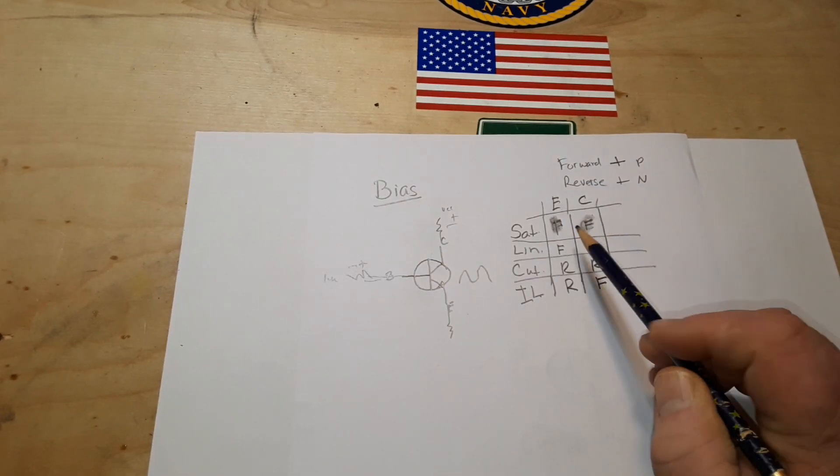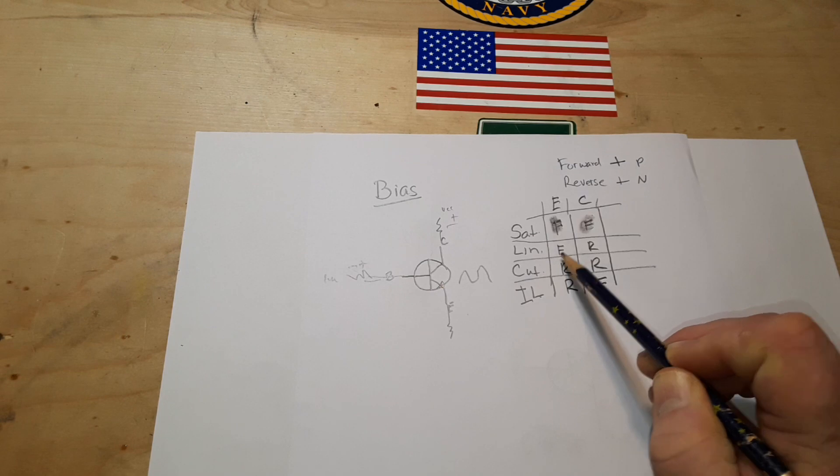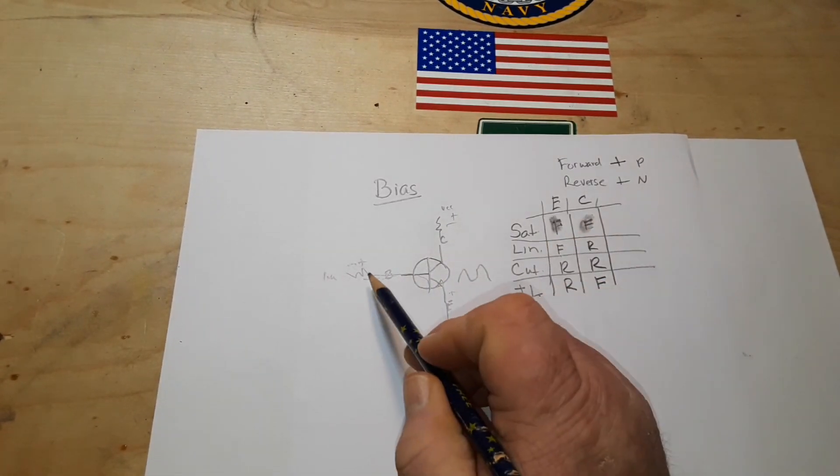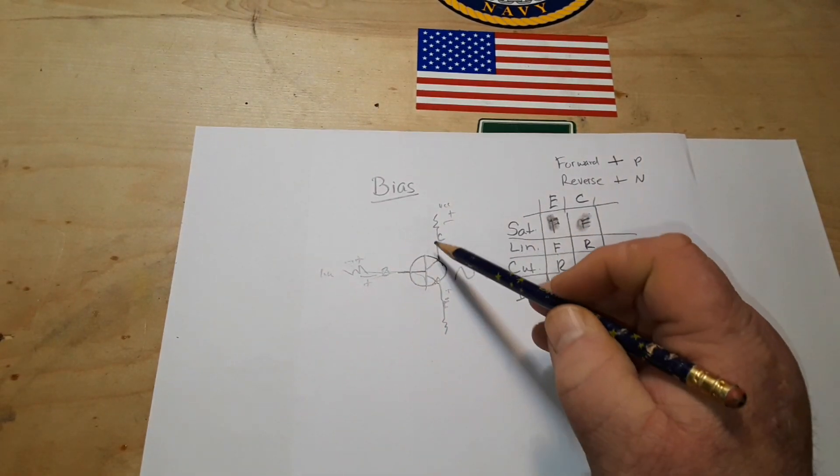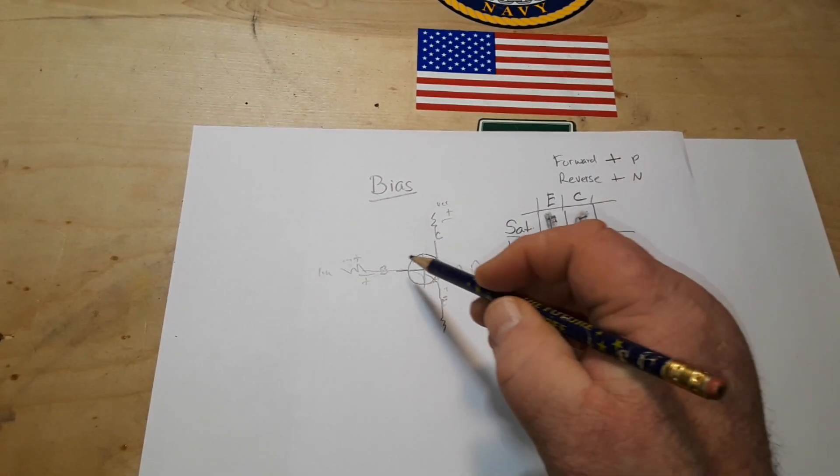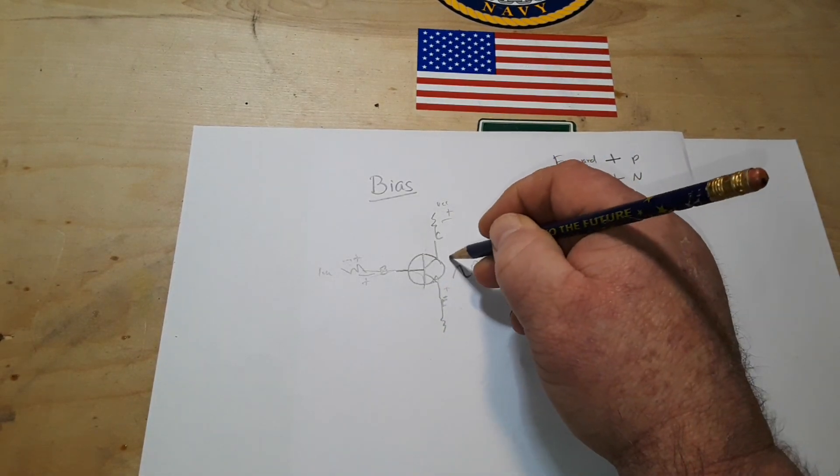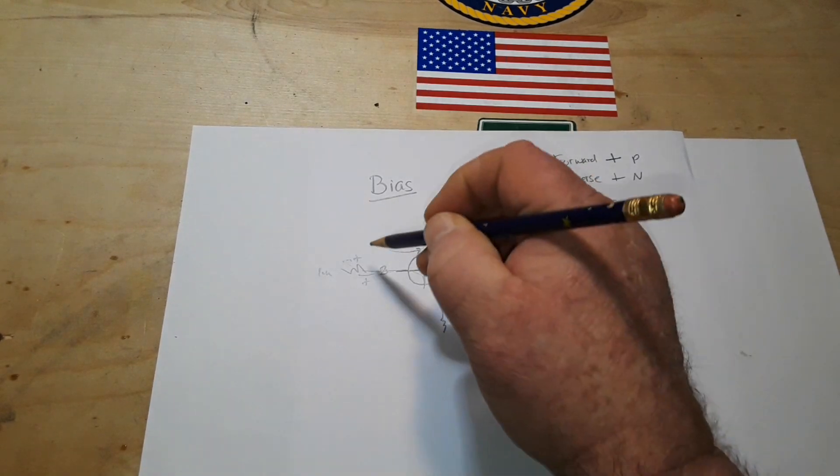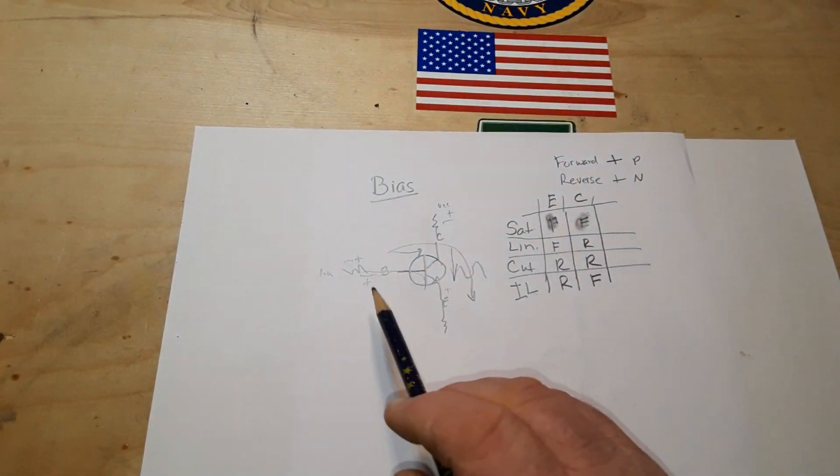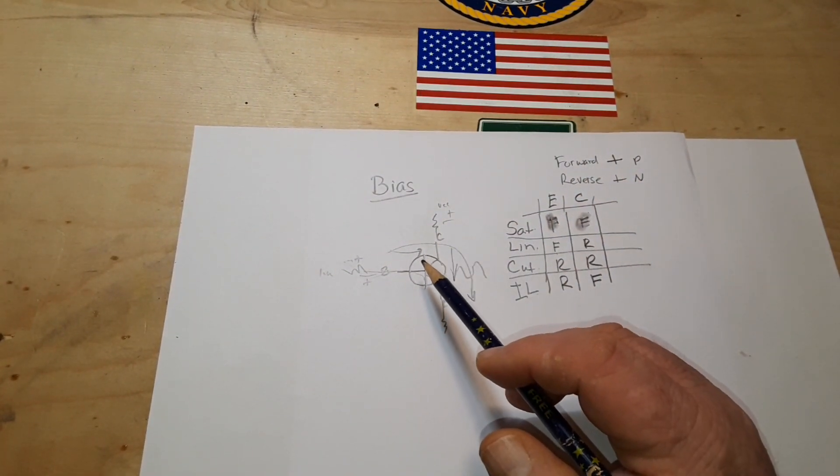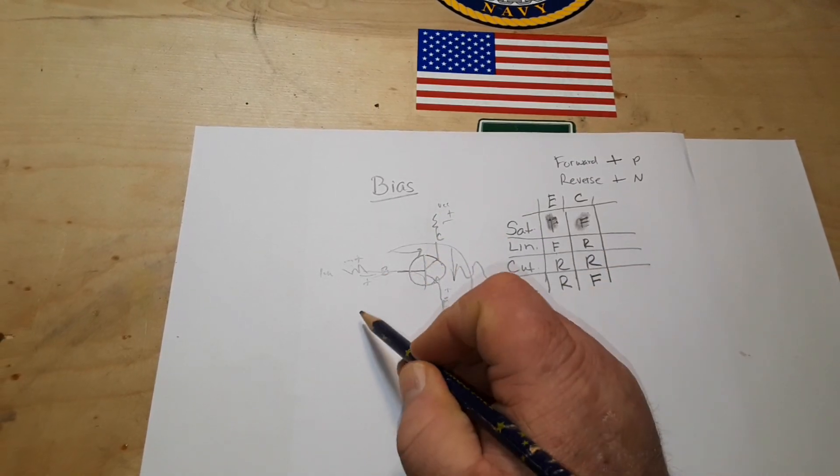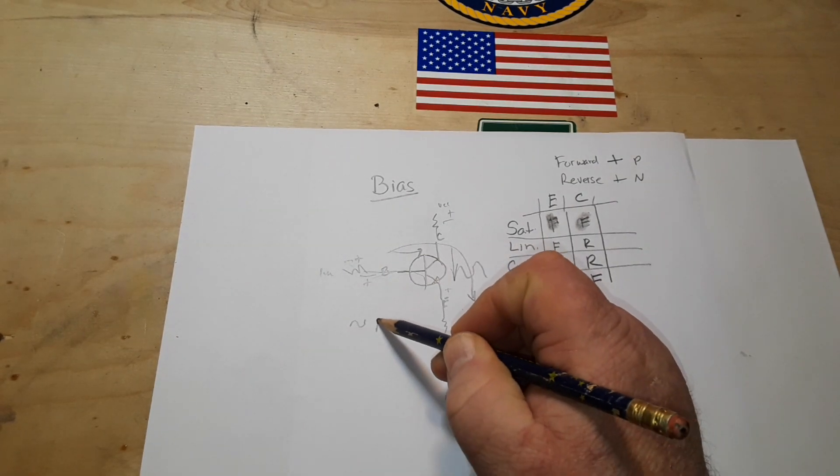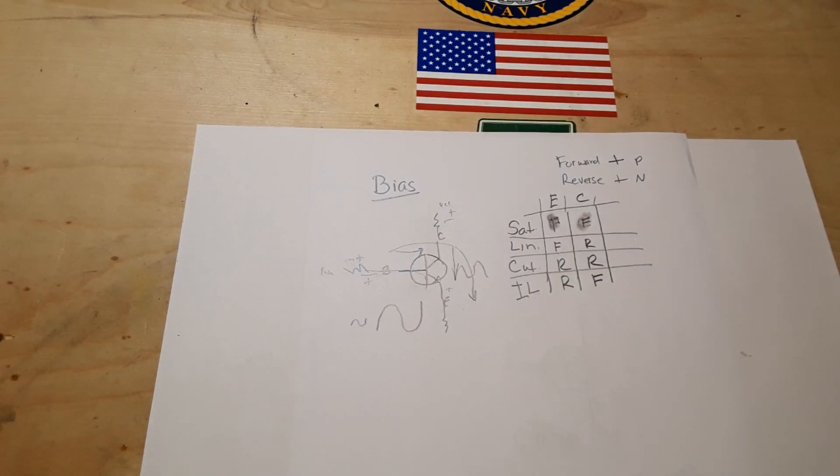Just remember by forward biasing your emitter and reverse biasing this, which simply means that the current is flowing in this direction, we get that linear region of the transistor and it is able to take a small signal and make it into a large signal.